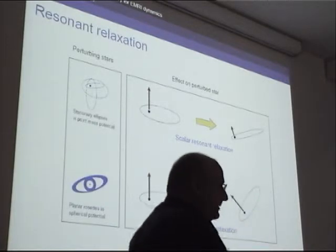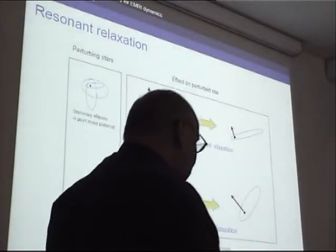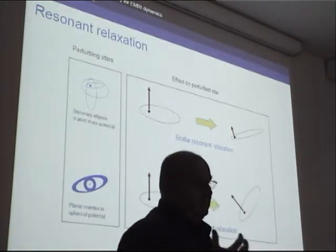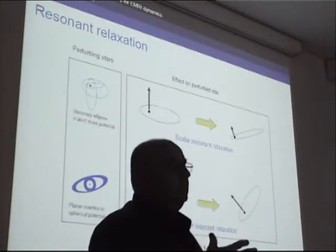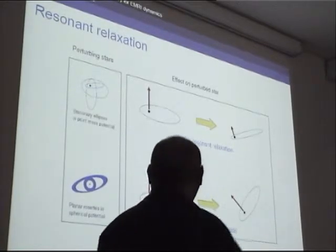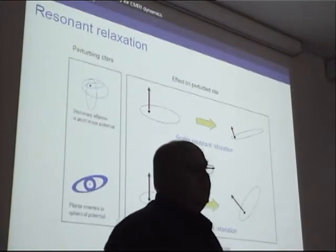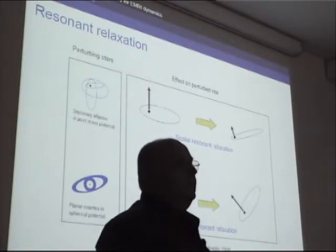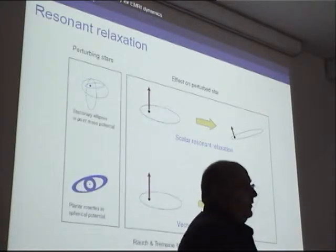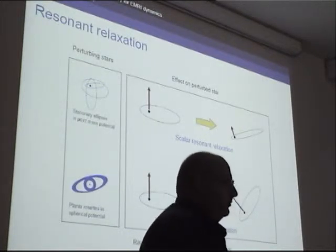Starting with resonant relaxation — it's been mentioned already, I'll just briefly restate what it is. In certain cases where the potential has a high degree of symmetry, these symmetries prevent the orbits from evolving in an arbitrary way. In a Keplerian potential, for example, the orbits are frozen into fixed ellipses. When this happens, a test particle no longer feels random kicks from all directions, but rather a coherent set of kicks which can be thought of as a torque operating on the star, changing its angular momentum.